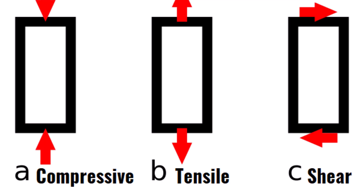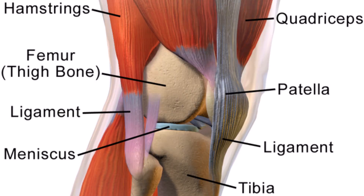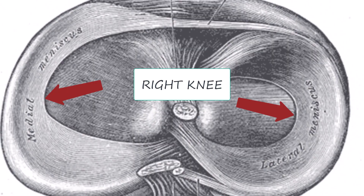Knee meniscus tears are the most prevalent type of knee injury due to the complexity and uniqueness of the knee meniscus tissue type compared to any other tissue type found in the body. The purpose of the knee meniscus is to absorb both compressive and tensile forces put on the knee joint, and this includes loading styles put on in multiple directions. The knee meniscus is found between the tibia and the femoral condyles, and here we find two semi-lunar shaped menisci: the medial and the lateral menisci.